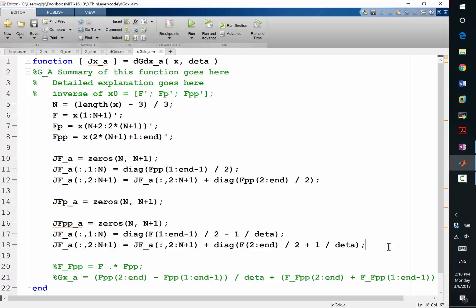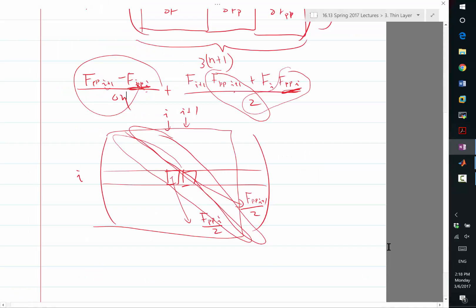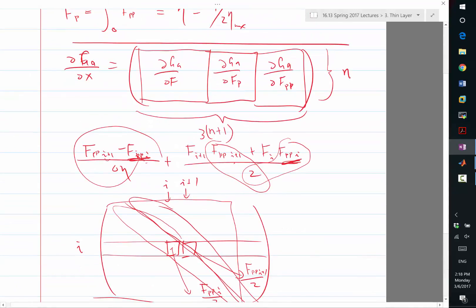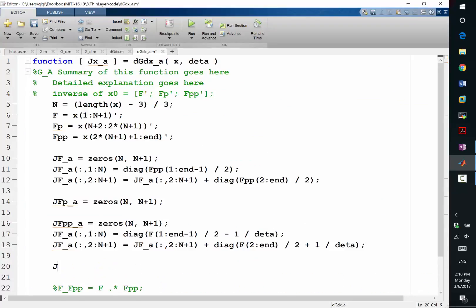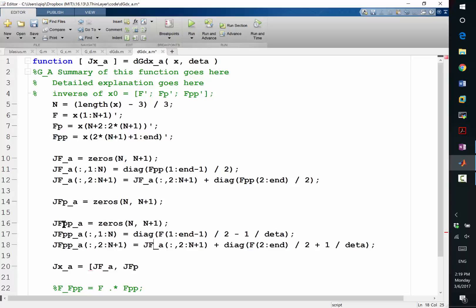All right. So, now I have the three blocks of this Jacobian. I'm going to assemble them. So, jx of a is going to be jf_a, jfp, oh, sorry. Here should be pp, right. So, jfp_a and jfpp_a. All right.